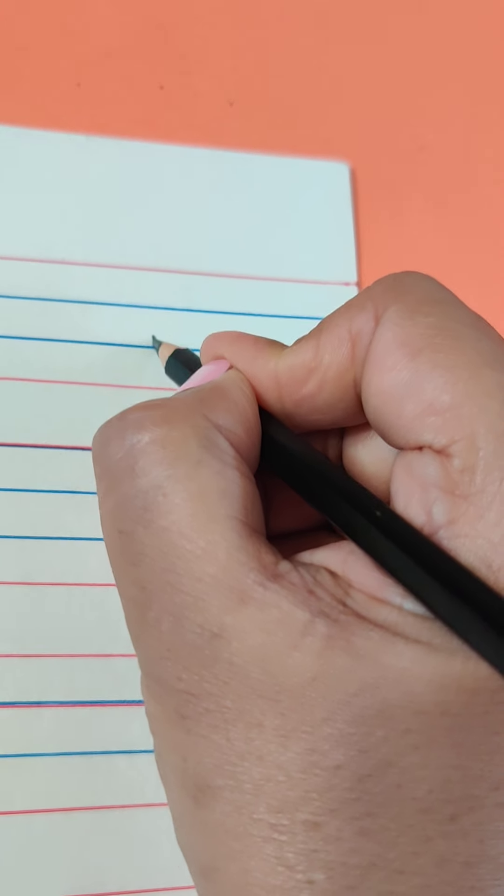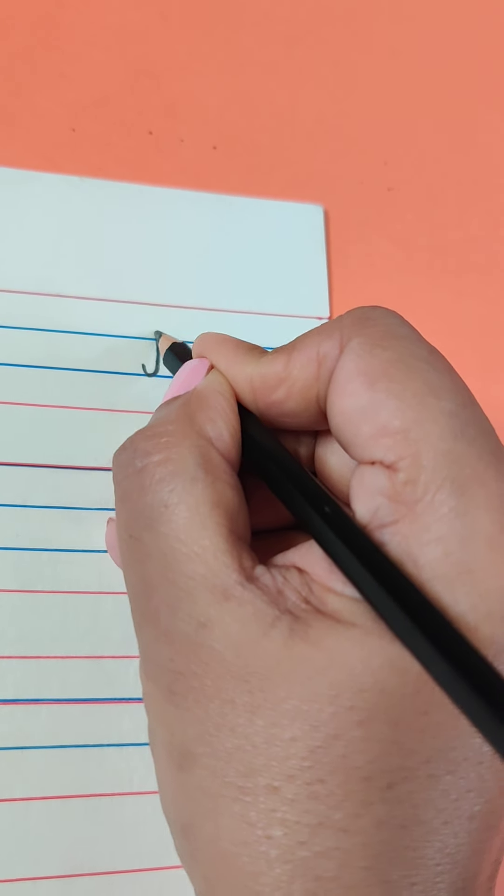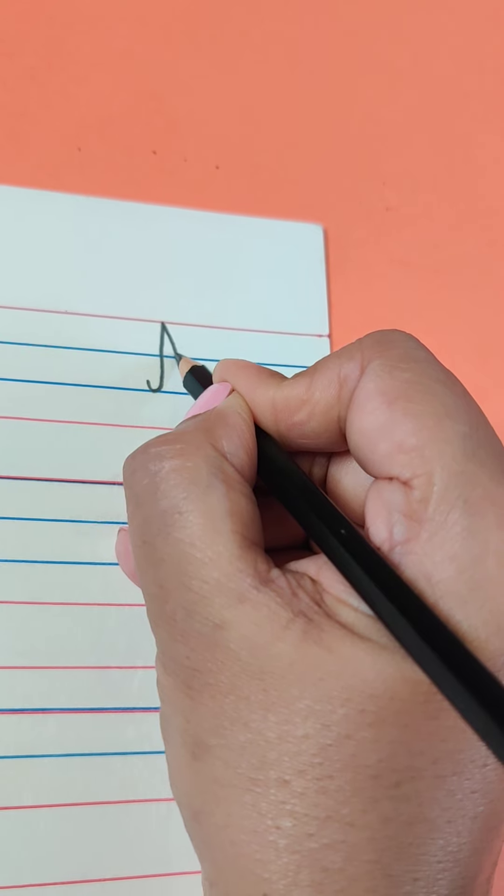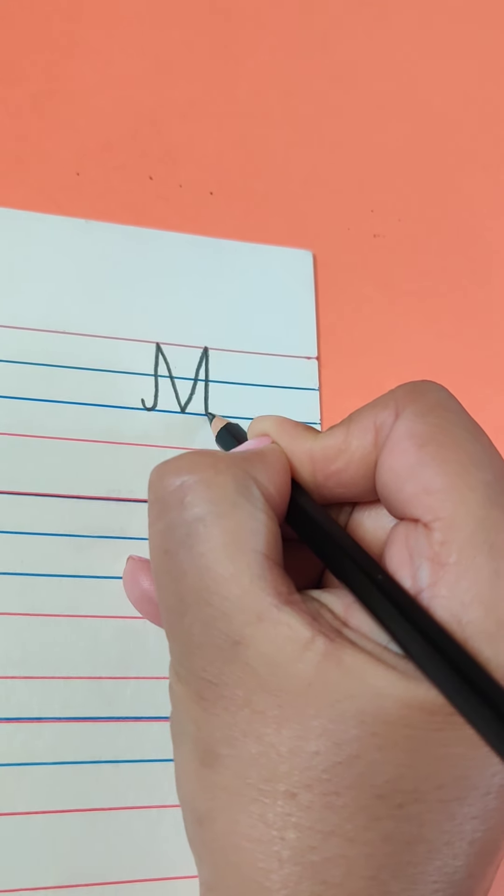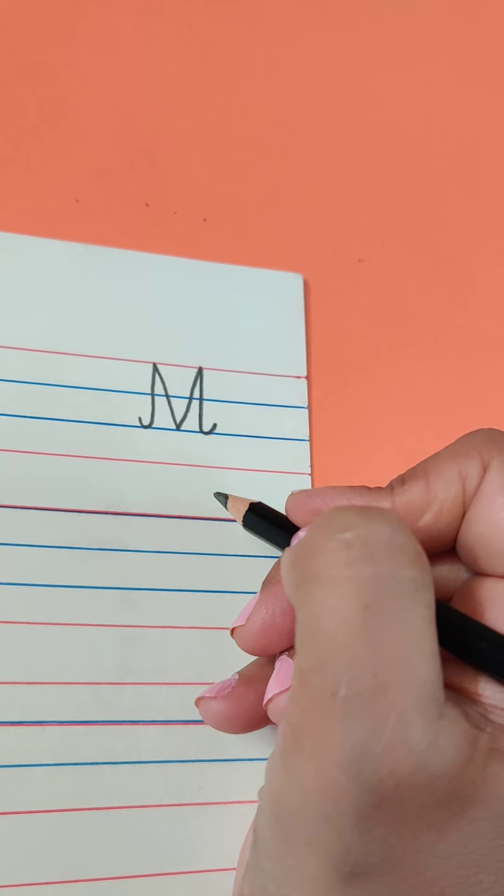One more time. Make a curve, go up slant, sorry, straight, slant, slant, stand and leave, curve and leave. Okay, so this is letter M.